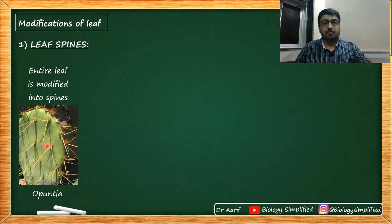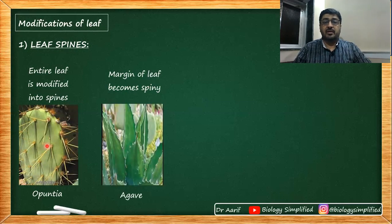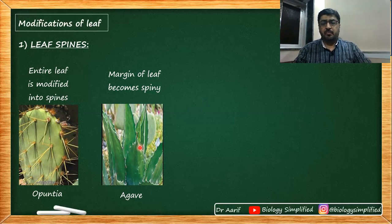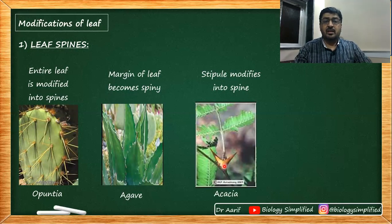The second type is the margin of the leaf becoming spiny — only the margin becomes spiny. The purpose again remains reducing the process of transpiration. The third type is the stipule modifying into a spine. In the case of Acacia, the stipule becomes a spine.